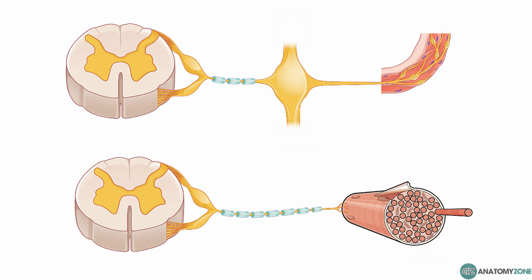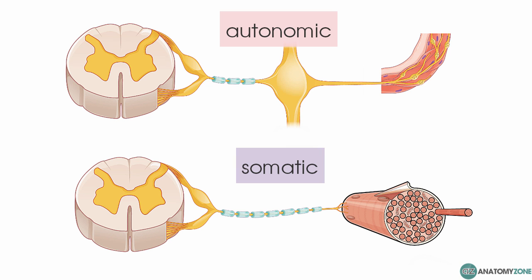The next point I want to make about the autonomic nervous system is the difference in the efferent component in comparison to the somatic nervous system. In the bottom diagram is a representation of the somatic nervous system and on the top we've got a representation of the autonomic nervous system. In the somatic nervous system, a peripheral stimulus is picked up by a sensory receptor and this stimulus gets brought back into the central nervous system by the sensory neuron.